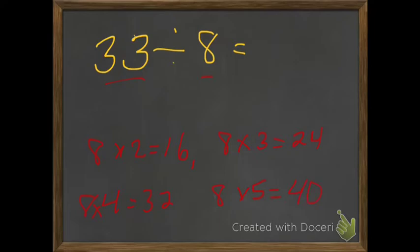Well, we know that one is out because that one is over. So we have to do 8 times 4. So I would change 33 to 32, and it would be 32 divided by 8 equals 4.